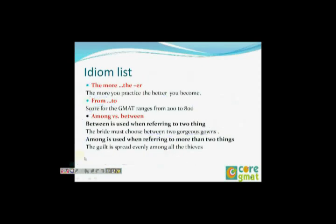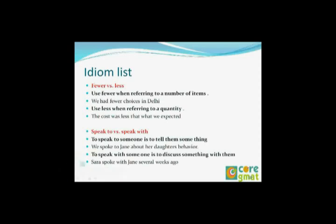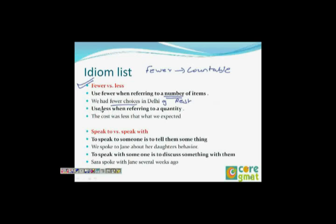Fewer vs. less: 'fewer' is used when referring to countable numbers — for example, 'we had fewer choices in Delhi.' 'Less' is used for uncountable quantities or amounts — for example, 'the cost was less than we expected.' We can count dollars but not cost, so 'less' is correct there. Remember: fewer is for countable, less is for uncountable.